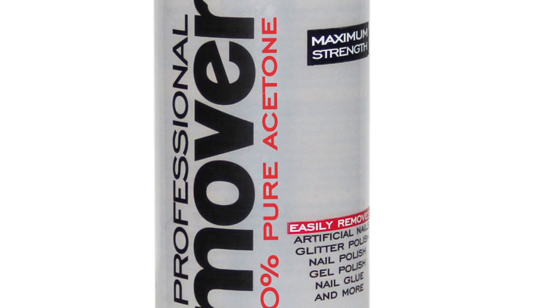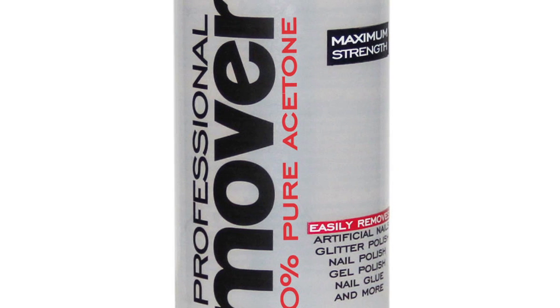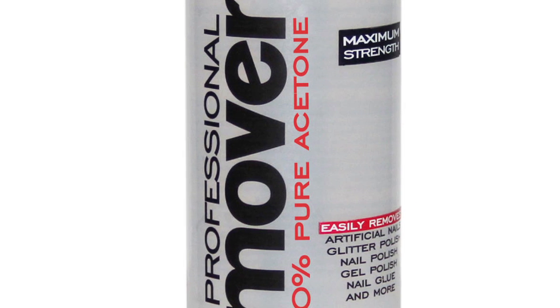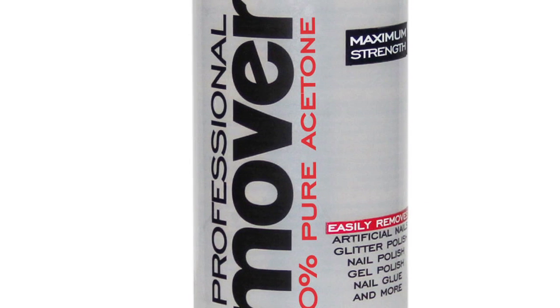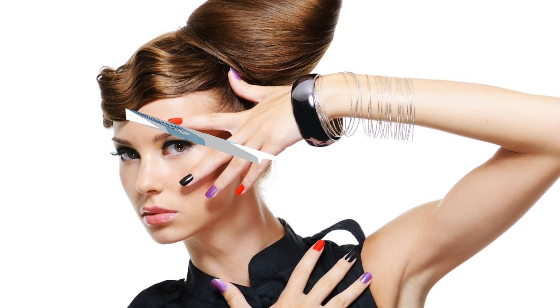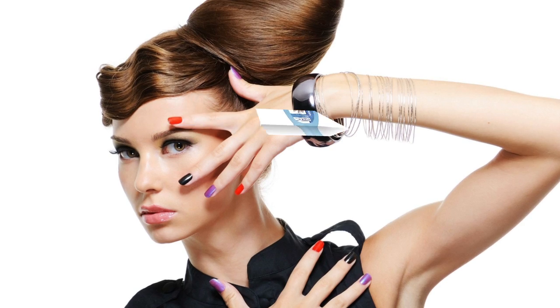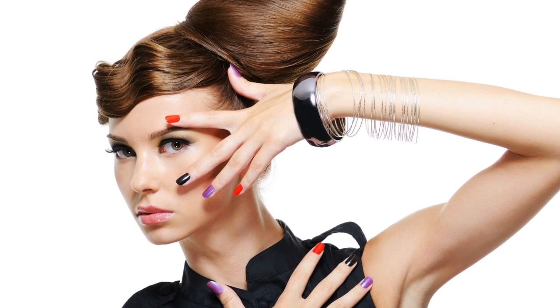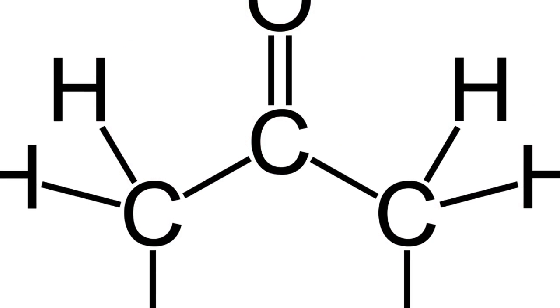How is acetone harmful for your body? Acetone is also referred to as dimethyl ketone and propanone. It is a commonly used solvent in different industrial procedures and it represents the famous ketone group, which is a major component of solvents.